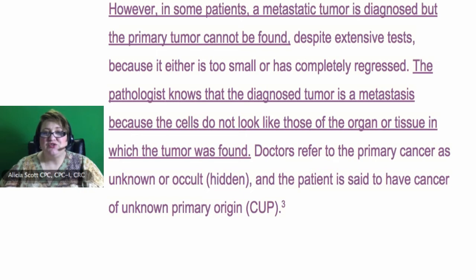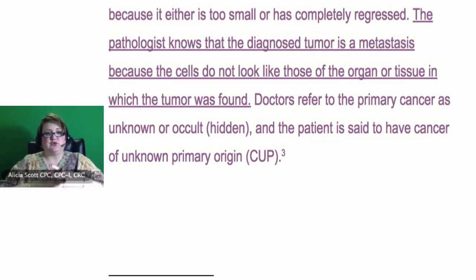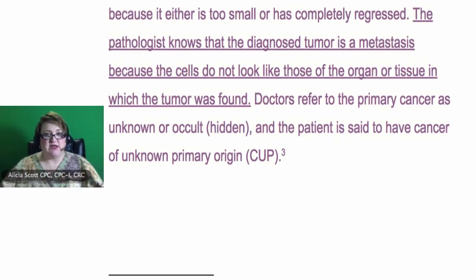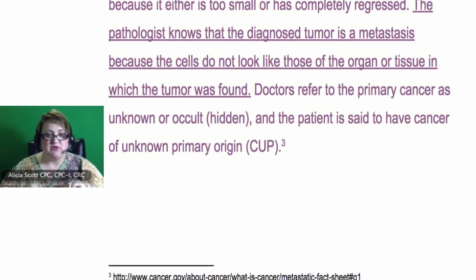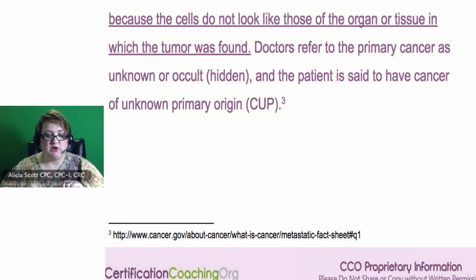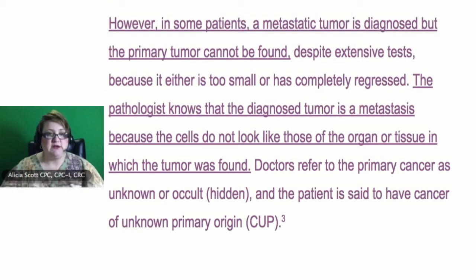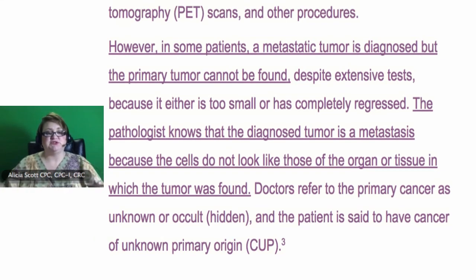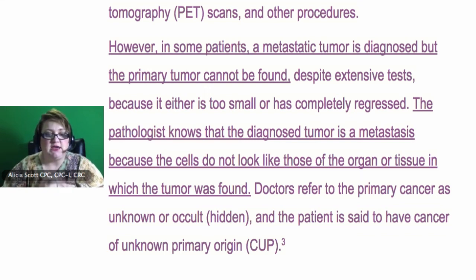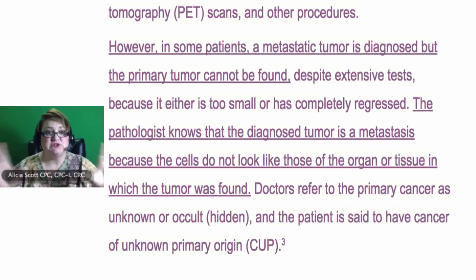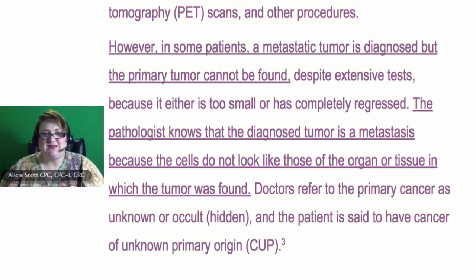Are you going to have more information? When you're doing risk adjustment coding, most of the MA plans will allow you to look through the entire year's worth of documentation to find out — only for cancer — a higher specificity. They don't let you do that with other diagnoses, but with cancer, when I worked for UHC, they did say that's the only diagnosis where you can use other encounters to determine what type of cancer or get it to the highest specificity. So when you have a diagnosis of metastatic cancer, I would start digging into the person's chart to get to higher specificity, but with just plain old metastatic breast, I would say that's secondary.